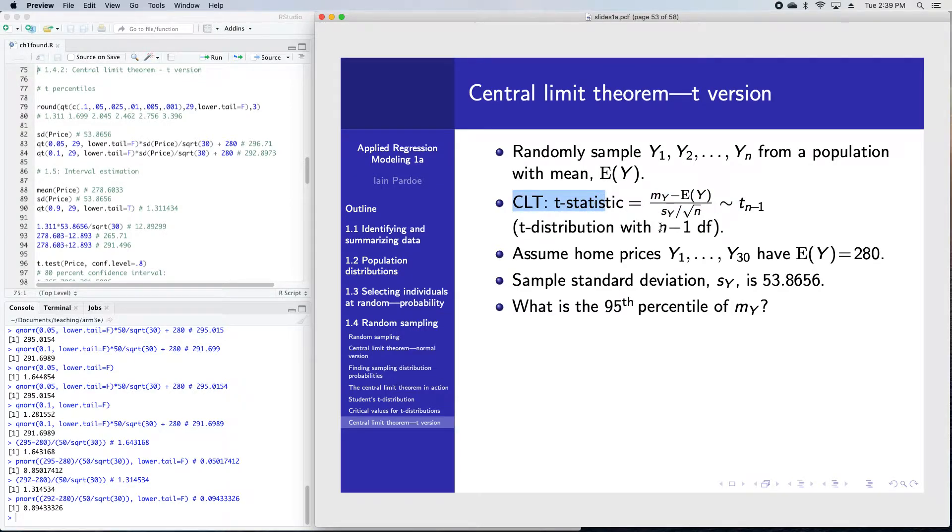Here's the central limit theorem. I'm standardizing again as I did before, only this time I'm using the sample standard deviation in the denominator. If I use my sample standard deviation rather than assumed population standard deviation, I don't get a z value, I get a t statistic. That has a t-distribution with n minus 1 degrees of freedom, written as t with a subscript n minus 1.